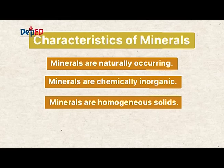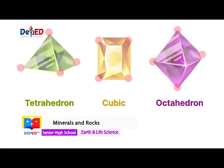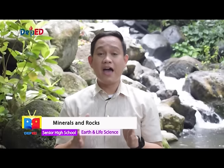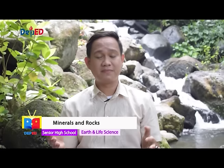Lastly, ordered internal structure or crystal structure. The atoms in a mineral are arranged in a systematic and repeating pattern. Liquids like water and mercury, and gases like air, do not have a crystalline structure, and are therefore not minerals. And those are the five characteristics of a substance in order to be considered as a mineral. Now, if you've found an unknown mineral, how are you going to identify it using your five senses?